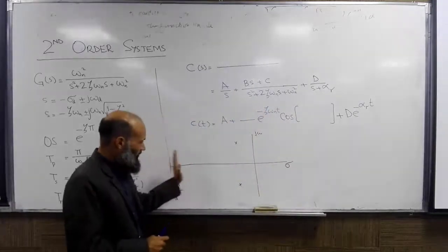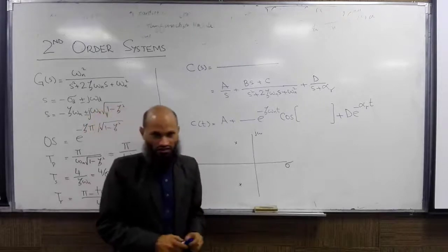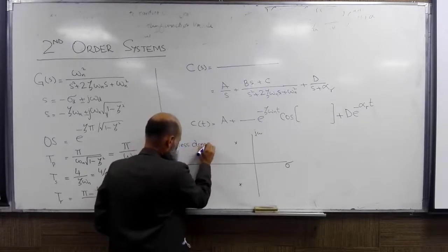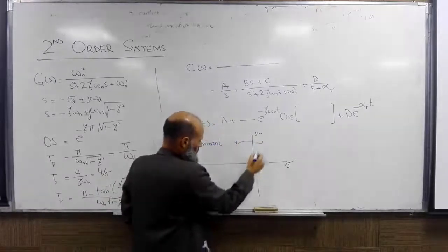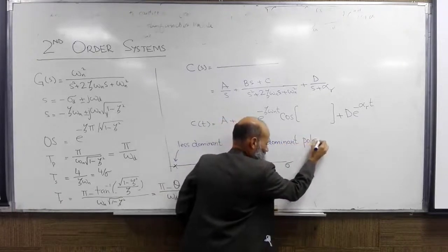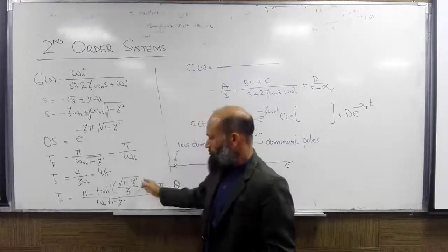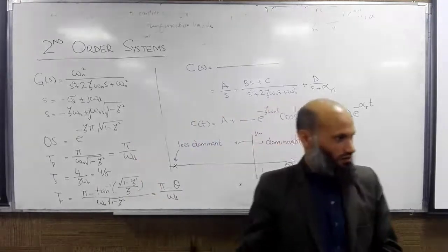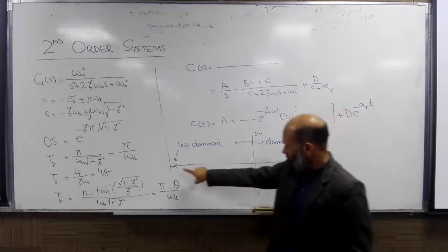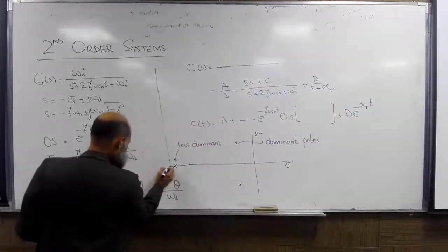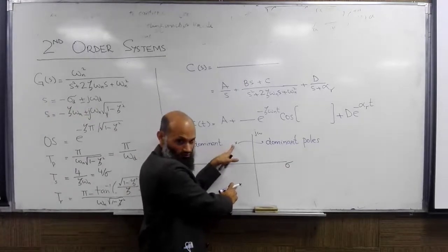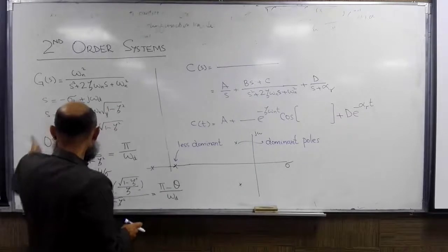This is the situation when the third pole is very far away in the left half S-plane. In that case we call it a less dominant pole. The two complex poles are called dominant poles — the response is mainly determined by the dominant poles and we can approximately use the second-order relations. This discussion applies to even higher order systems. For example, if we have two complex poles at one location, a third pole, and a fourth pole further to the left, those farther poles are less dominant and the response is mainly determined by the two dominant poles.